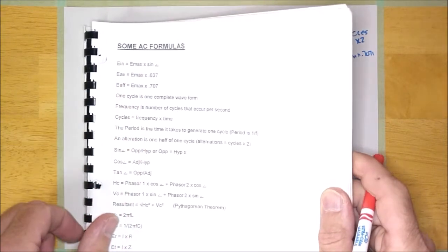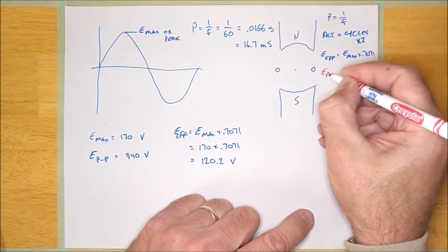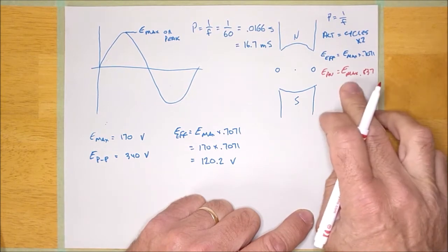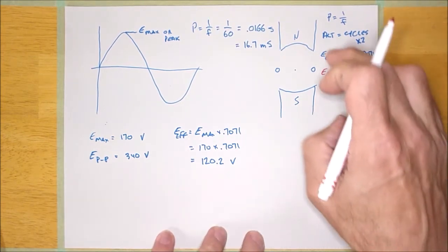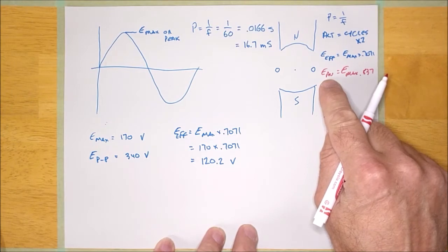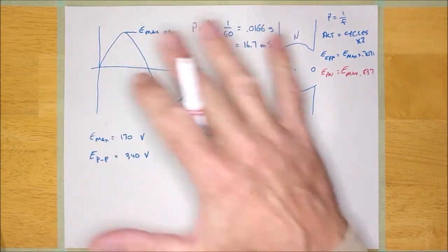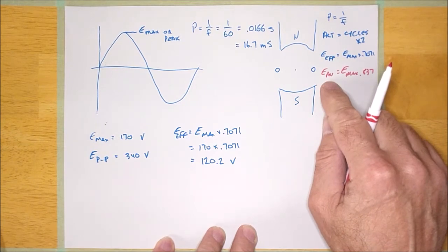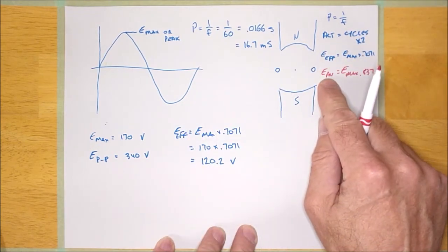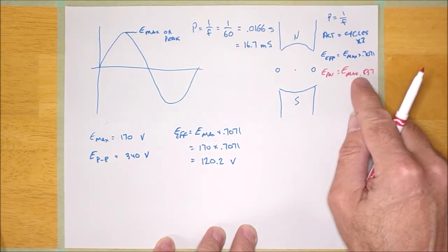So if we look at it here, it says E average is equal to E max times 0.637. I'm going to write it down right over here. E average is going to be E max times 0.637. Now, what are they talking about? Average voltage — it's different than the effective voltage. The multiplier is different. The average voltage is calculated when you've done some rectification, because the average voltage is also the DC voltage. Average is always DC.